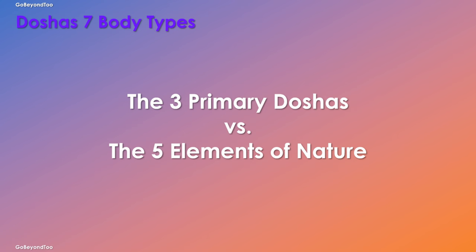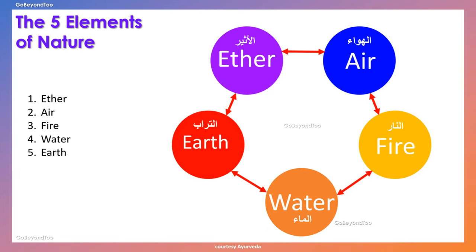The three primary doshas versus the five elements of nature. The five elements of nature, as you may know, are ether, air, fire, water, and earth.